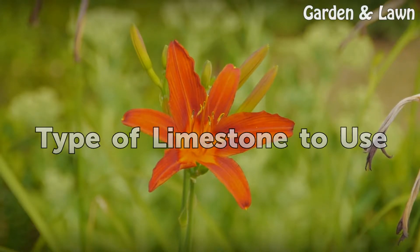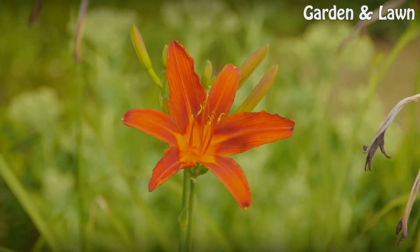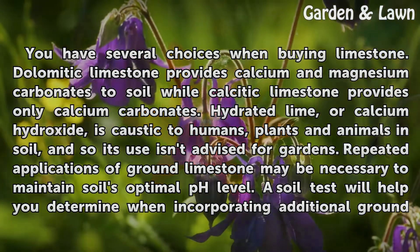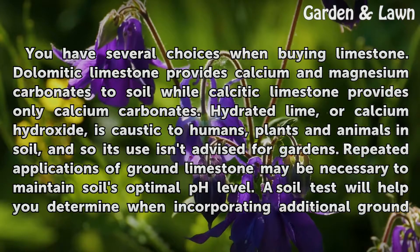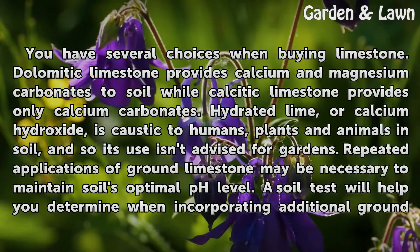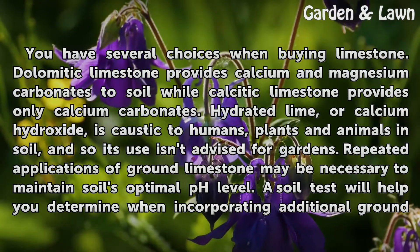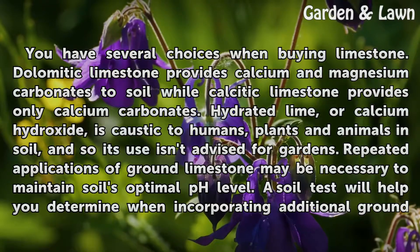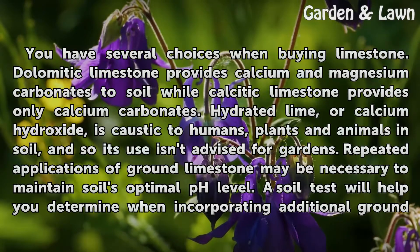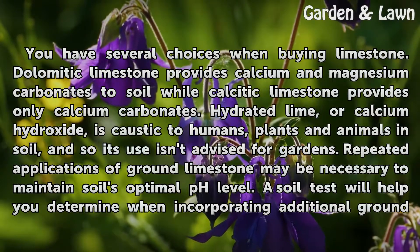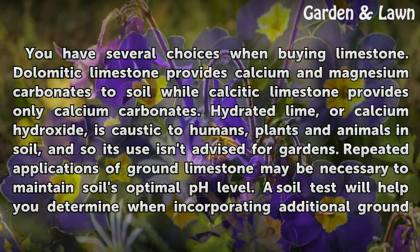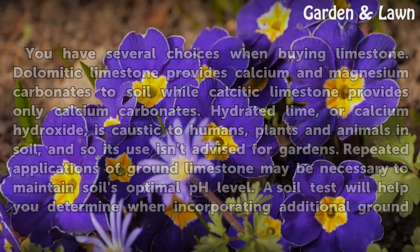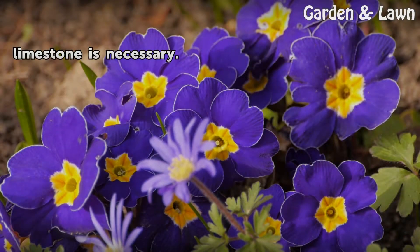You have several choices when buying limestone. Dolomitic limestone provides calcium and magnesium carbonates to soil, while calcitic limestone provides only calcium carbonates. Hydrated lime, or calcium hydroxide, is caustic to humans, plants, and animals in soil, and so its use isn't advised for gardens. Repeated applications of ground limestone may be necessary to maintain soil's optimal pH level. A soil test will help you determine when incorporating additional ground limestone is necessary.